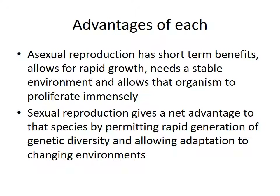Before we look at those methods, let's consider the advantages — why did organisms choose asexual or sexual reproduction? Asexual reproduction has a lot of short-term benefits: it allows for rapid growth. The only problem is it needs a stable environment. Once you have that stable environment, the organism can proliferate immensely — you can keep on growing and growing. But the minute the food runs out or the environment changes, parts of you will start to die off in that area and you might end up with very few left.